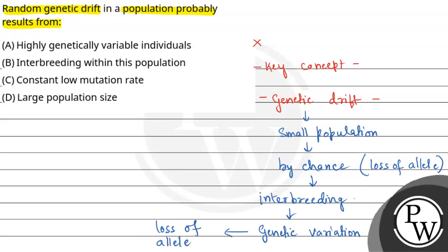Option B: interbreeding within this population. Interbreeding can bring genetic variation, which can help drive genetic drift. This is a result of genetic drift. So this is the correct option.